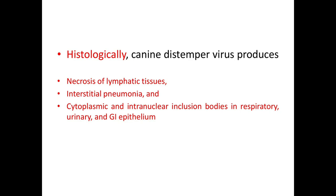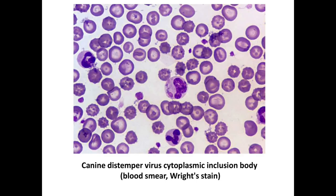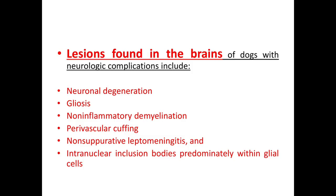Histologically, canine distemper virus produces necrosis of lymphatic tissues, interstitial pneumonia, and cytoplasmic and intranuclear inclusion bodies in the respiratory, urinary, and GI epithelium. Inclusion bodies are mainly seen in leukocytes like neutrophils and monocytes. Lesions in the brains of dogs with neurologic complications include neuronal degeneration, gliosis, non-inflammatory demyelination, perivascular cuffing, non-suppurative leptomeningitis, and intranuclear inclusion bodies predominantly within glial cells.